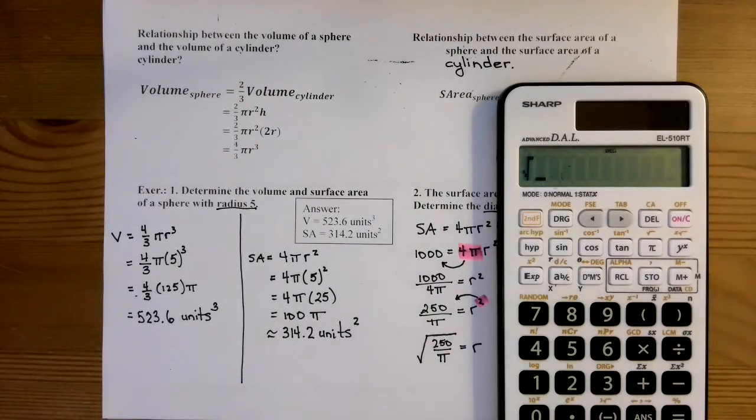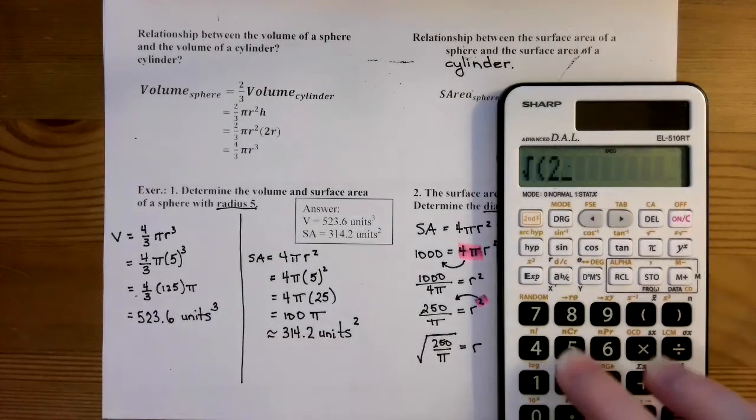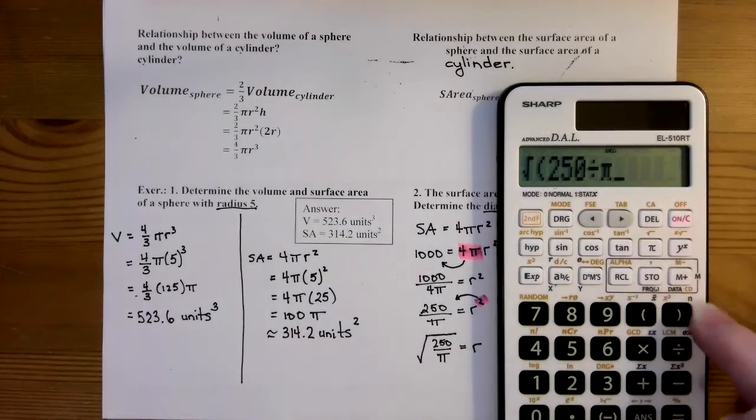So it's an expression under the square root. It's 250 divided by π. So because it's an expression under the square root, I have to make sure in my calculator that I put it in brackets. Otherwise, it'll take the square root of 250 and then divide that answer by π. So I'm going to do brackets, 250 divided by π.